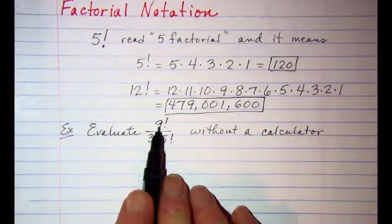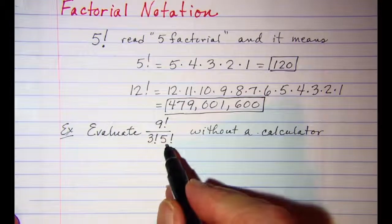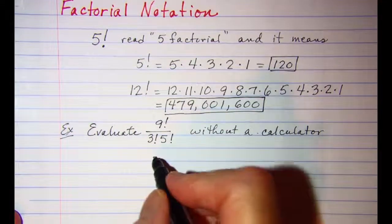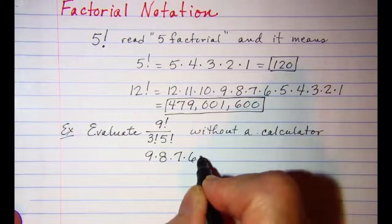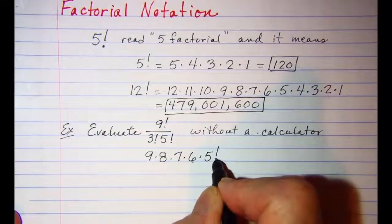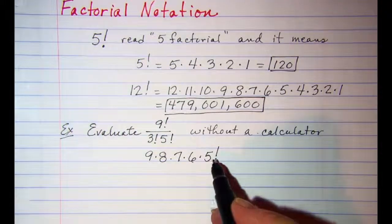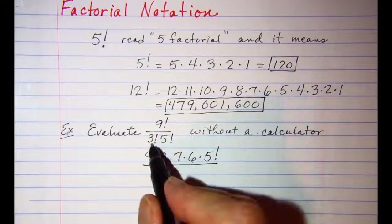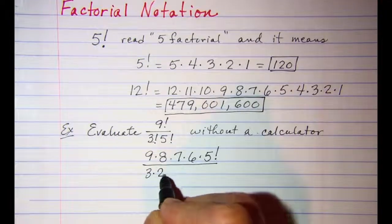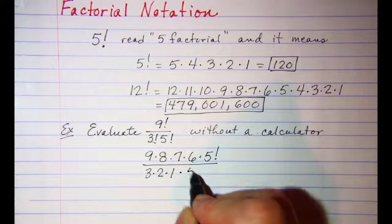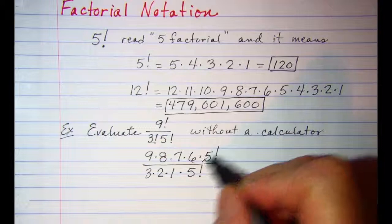To simplify this, I would write my 9 factorial until I reach the biggest of these two, so I would write 9 × 8 × 7 × 6 × 5, and then instead of going all the way down, I'm just going to write the rest of those factors as 5!. And then in the bottom I'm going to expand my 3!, so 3 × 2 × 1, and then my 5! I'm going to leave alone.